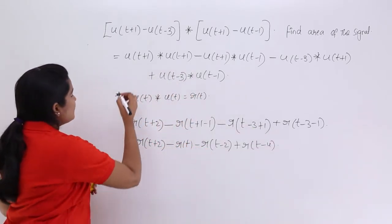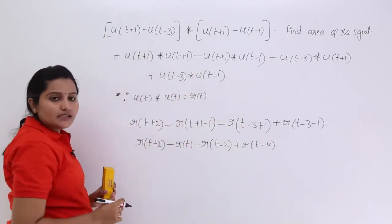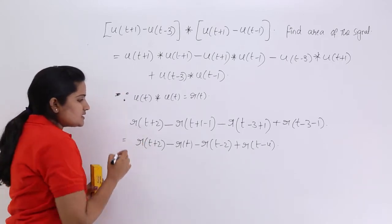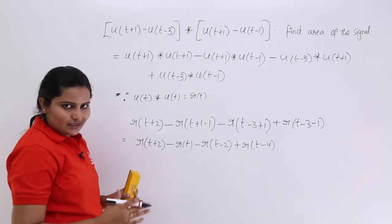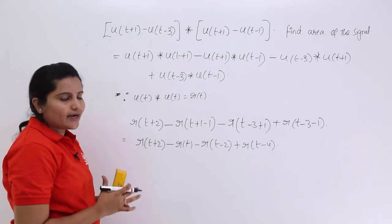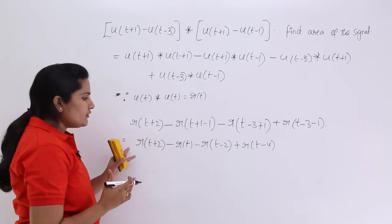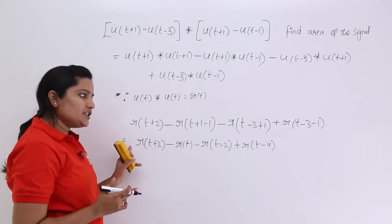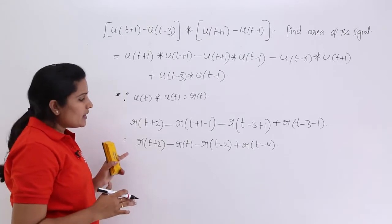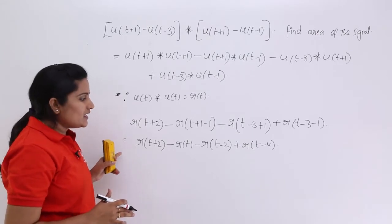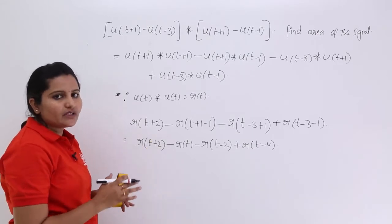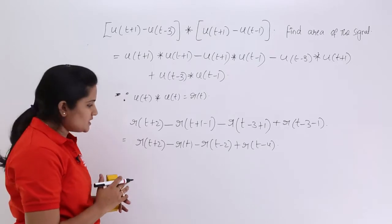This is the resultant signal from the convolution. To find the area, I want to draw the signal and get the area graphically. If you integrate all these ramps directly it is tedious, which is why I am going with the graphical procedure.